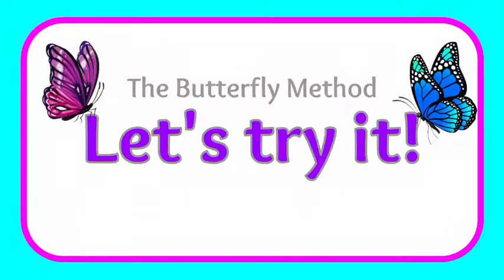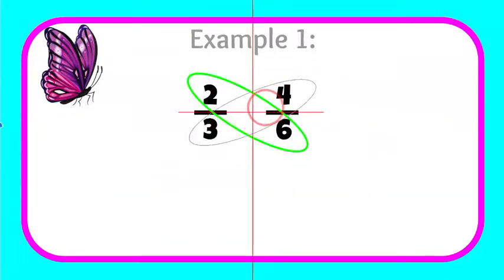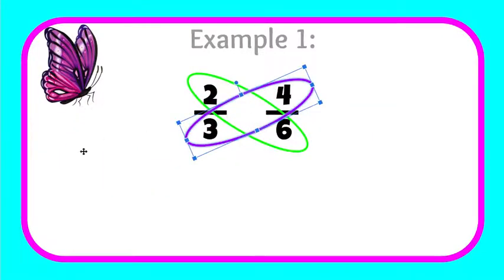Now let's try it. Let's look at the fraction two thirds and four sixths and see if they're greater than each other, less than each other, or equivalent. So I'm going to make my wing pairs first. So I'm going to circle two and six together and three and four together.